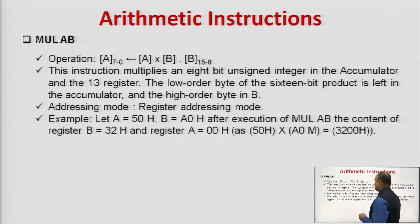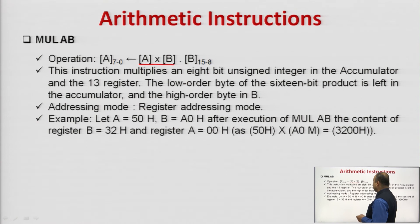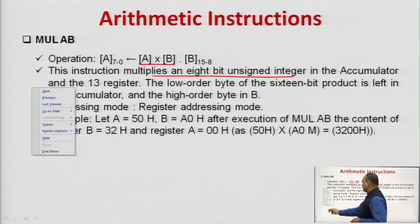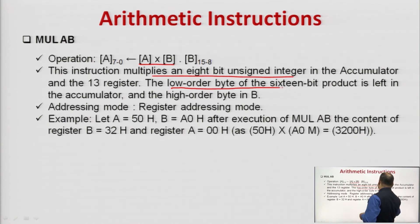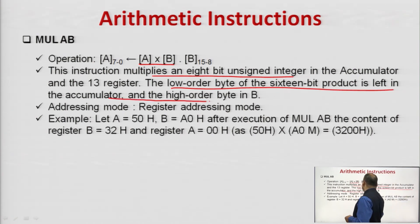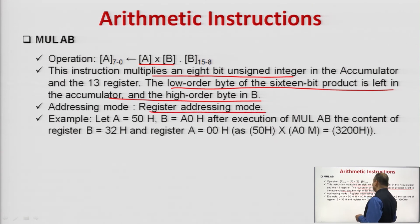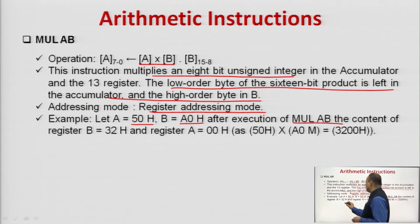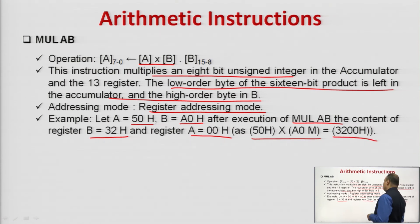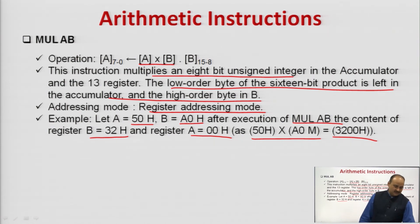Next is MUL AB. This instruction performs the multiplication operation: A × B. It multiplies two 8-bit unsigned integers in the accumulator and register B. The low-order byte of the 16-bit product is stored in the accumulator and the high-order byte is in register B. For example, if A = 50h and B = A0h, after MUL AB the result is 3200h, so B = 32h and A = 00h.